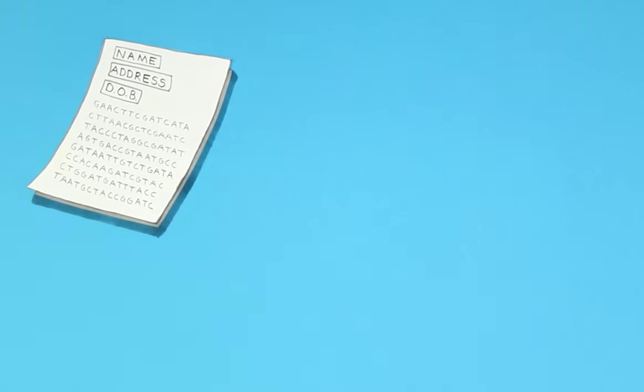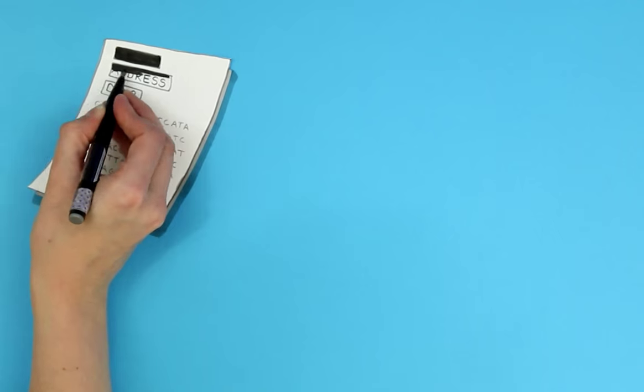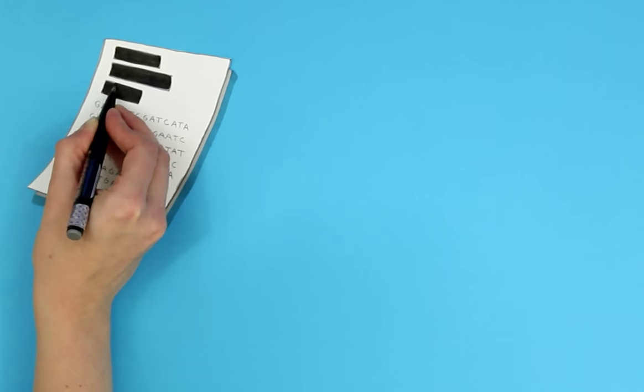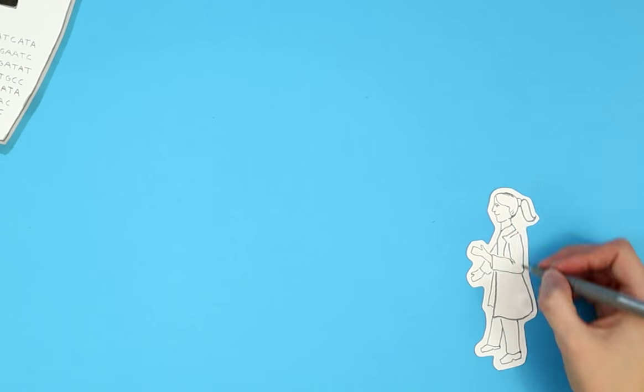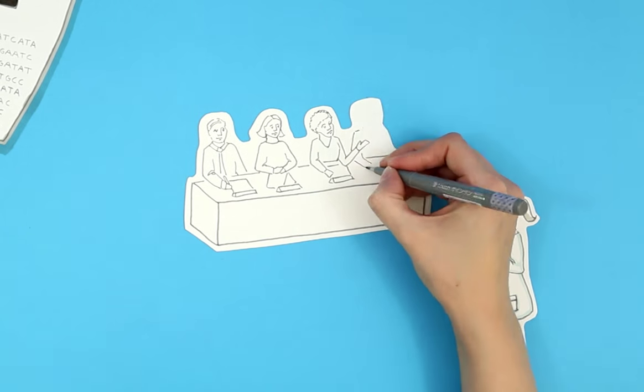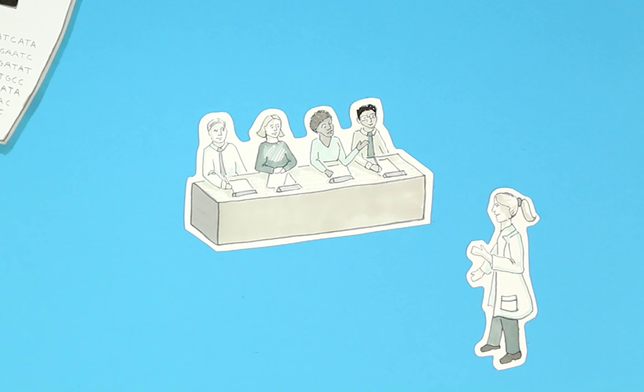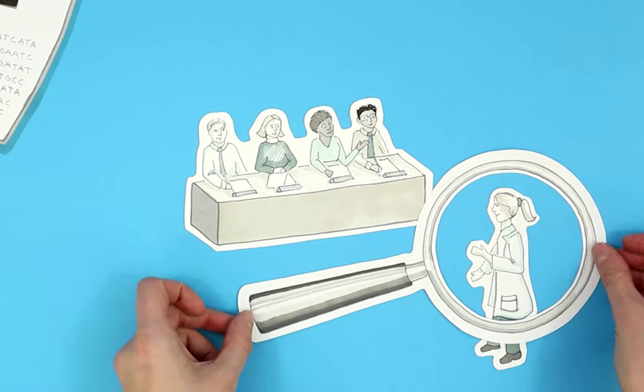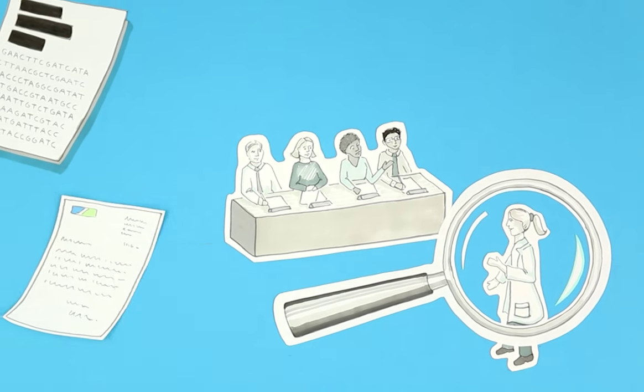Before we let research scientists look at this data, we remove anything that might directly identify you. Scientists have to tell an independent access review committee exactly how they want to use the data and why. They look at their request very carefully.